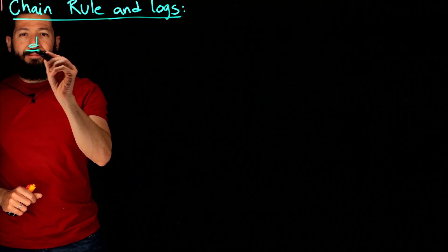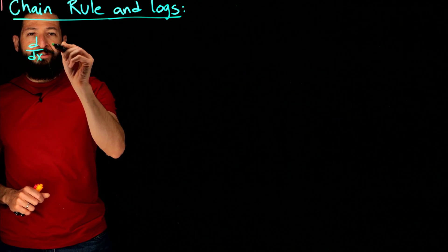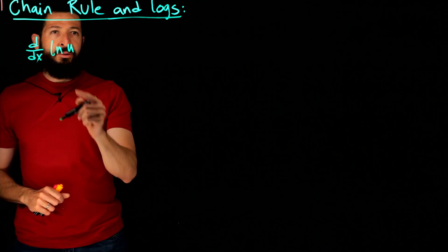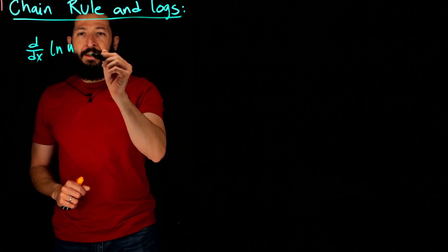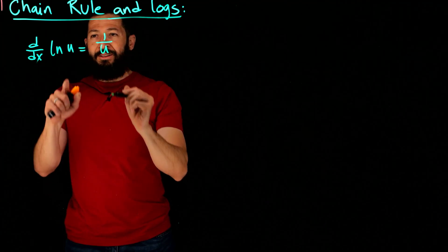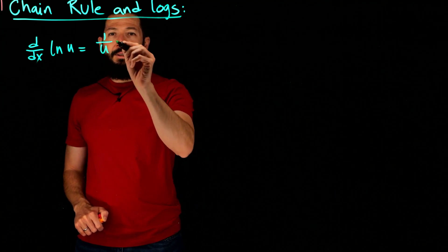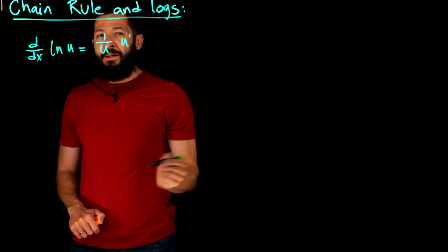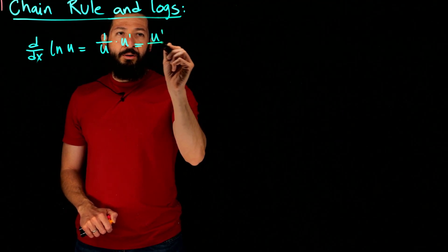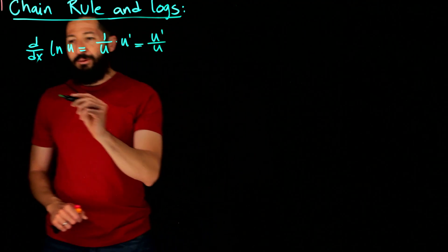Let's compute the derivative of the natural log of u, where u is a function of x. The derivative of ln(u) is 1 over u times the derivative of the inside, u prime, which we normally write as u prime over u. Logarithms are really nice for differentiation.